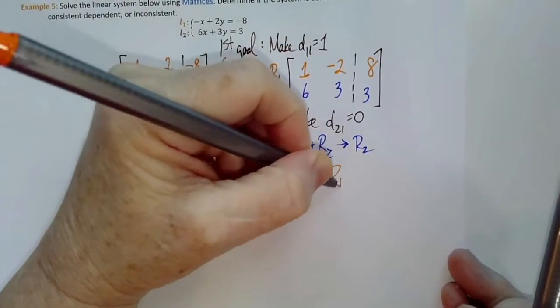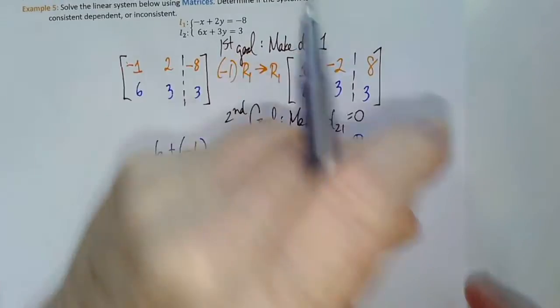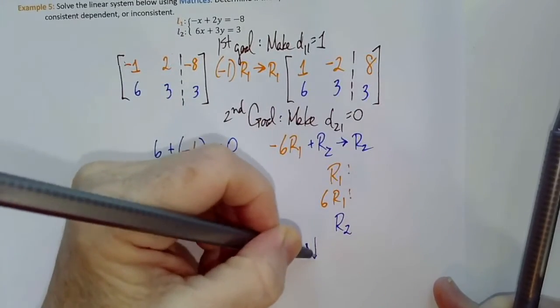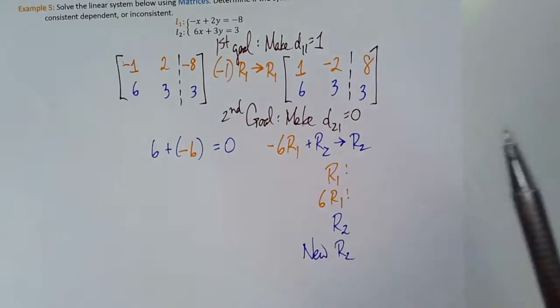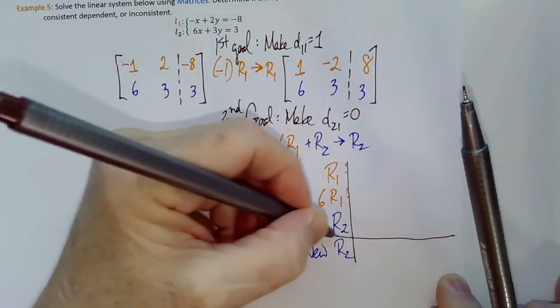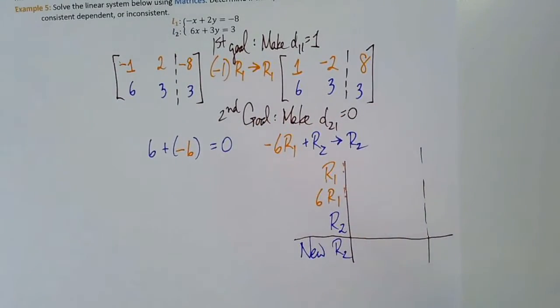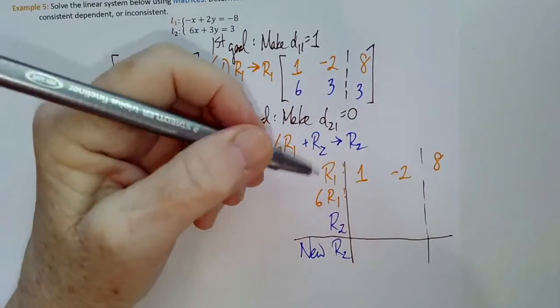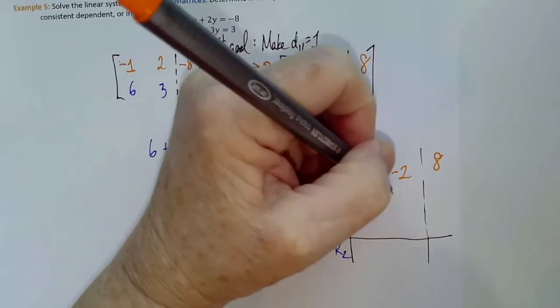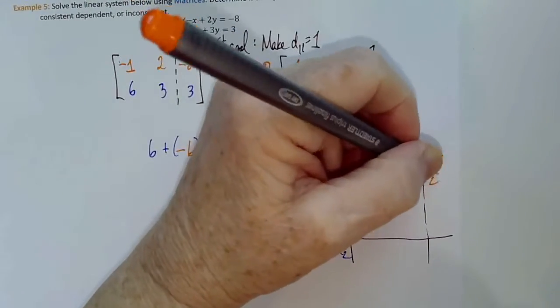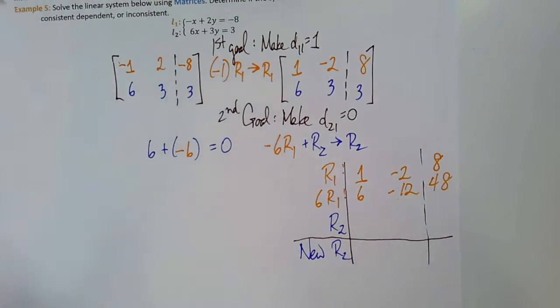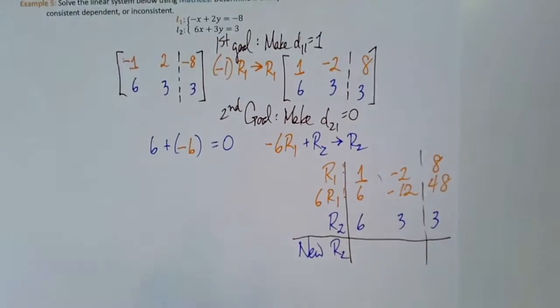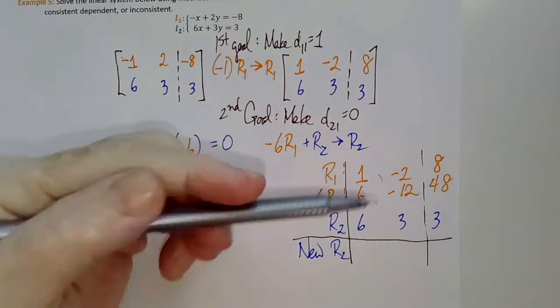Row 1 is 1, negative 2, 8. 6 times that row: 6 times 1 is 6, 6 times negative 2 is negative 12, and 6 times 8 is 48. Row 2 is currently 6, 3, 3.